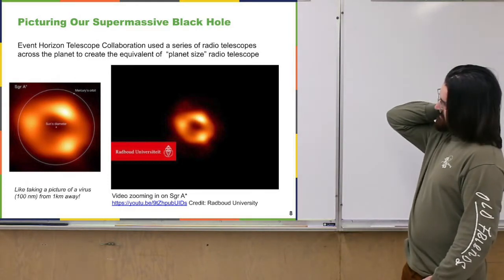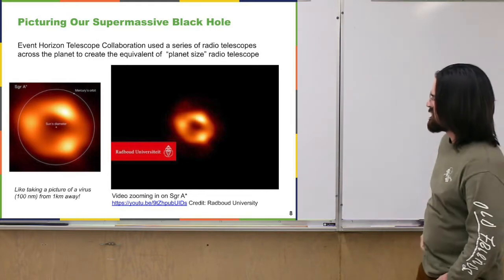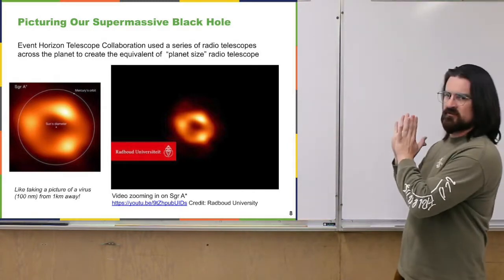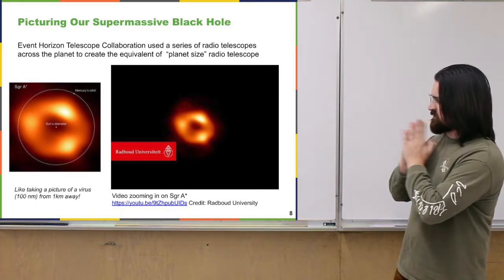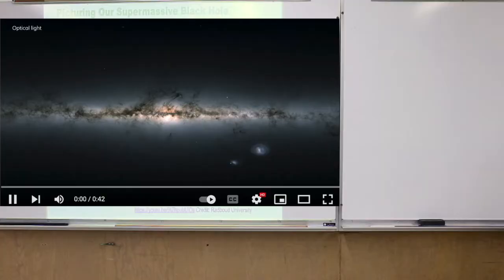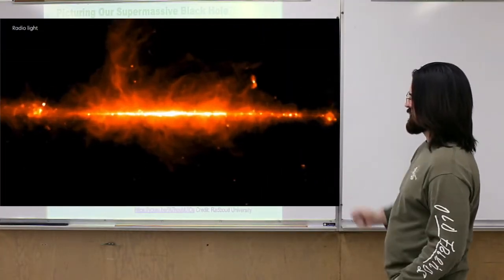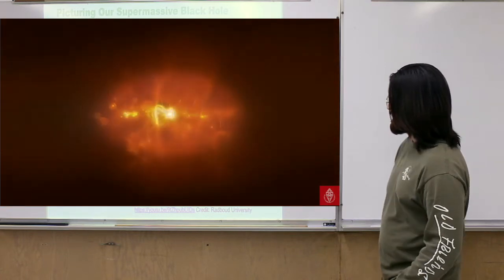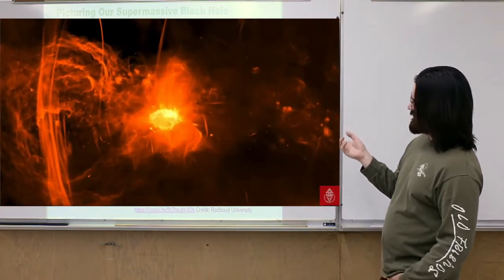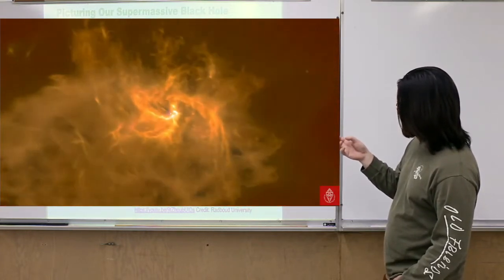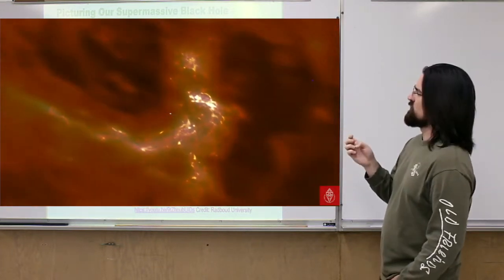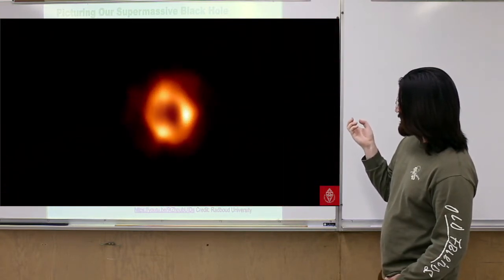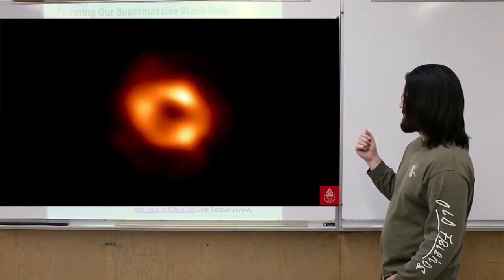There's another animation zooming in on the center of the galaxy, mostly in the radio, to give a sense of the size of this thing relative to the galaxy. Starting in visible and then transitioning to radio, zooming in toward the center of the galaxy, then continuing to zoom in much further until we reach Sagittarius A*, the supermassive black hole.